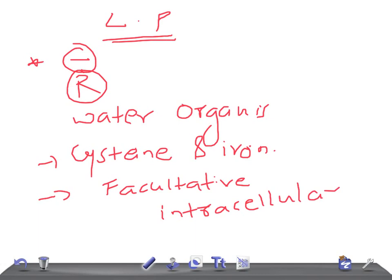So in USMLE examination, try to look for if there is any history of air conditioning, or if there's any elderly smoker, heavy drinker, or immunocompromised patient. Try to look for this, and it causes atypical pneumonia.